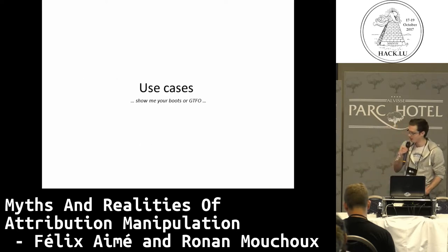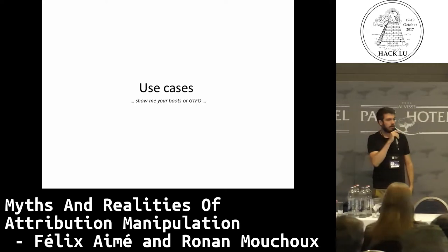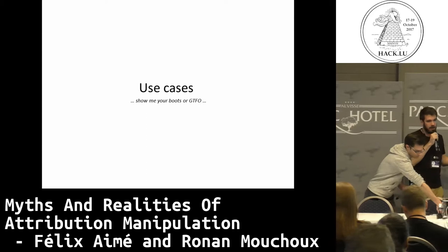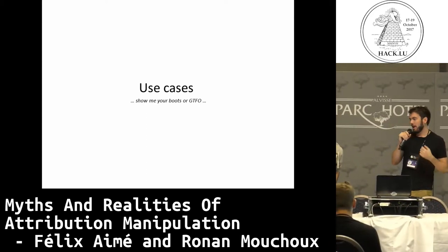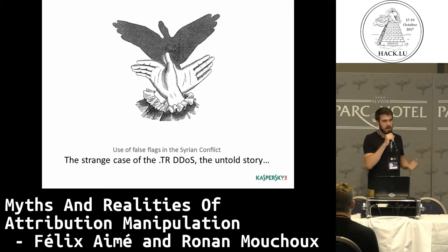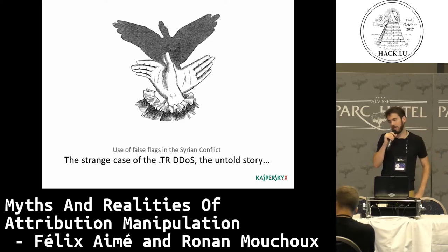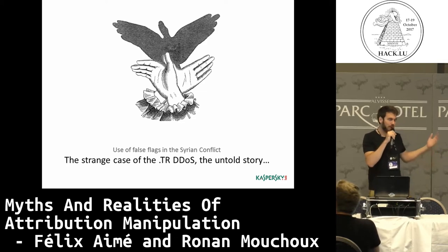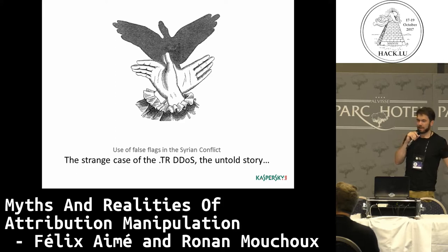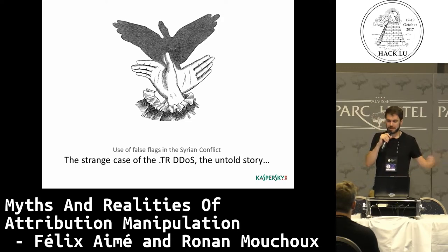Now I'll let Félix present some false flag examples to jump into the topic. A false flag is when an attacker hides behind a false identity or false avatar. We will see that during the Syrian conflict, some attackers used false flags to carry out attacks. The first case is the strange case of the .TR DDoS — the DNS country code for Turkey — and we'll also discuss why there is no real copycat in APT.